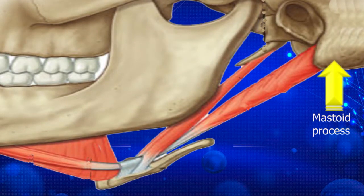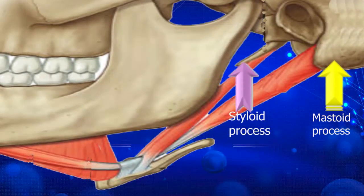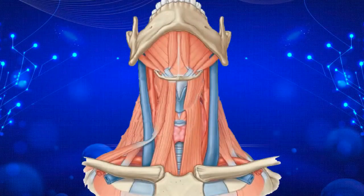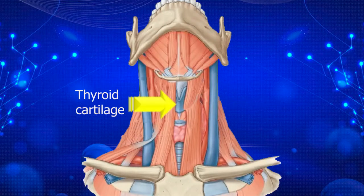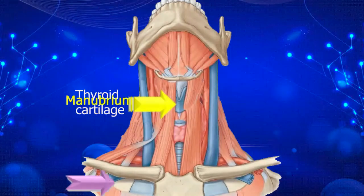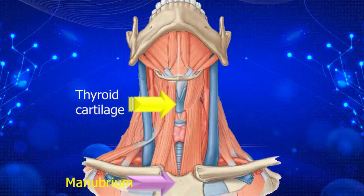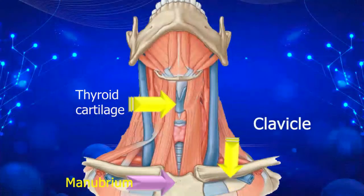Our next landmark is the mastoid process and also the styloid process. These two processes are all extensions of the temporal bone of the skull. Other landmarks relevant to our study are the thyroid cartilage, which is below the hyoid bone, and then the manubrium and also part of the clavicle.